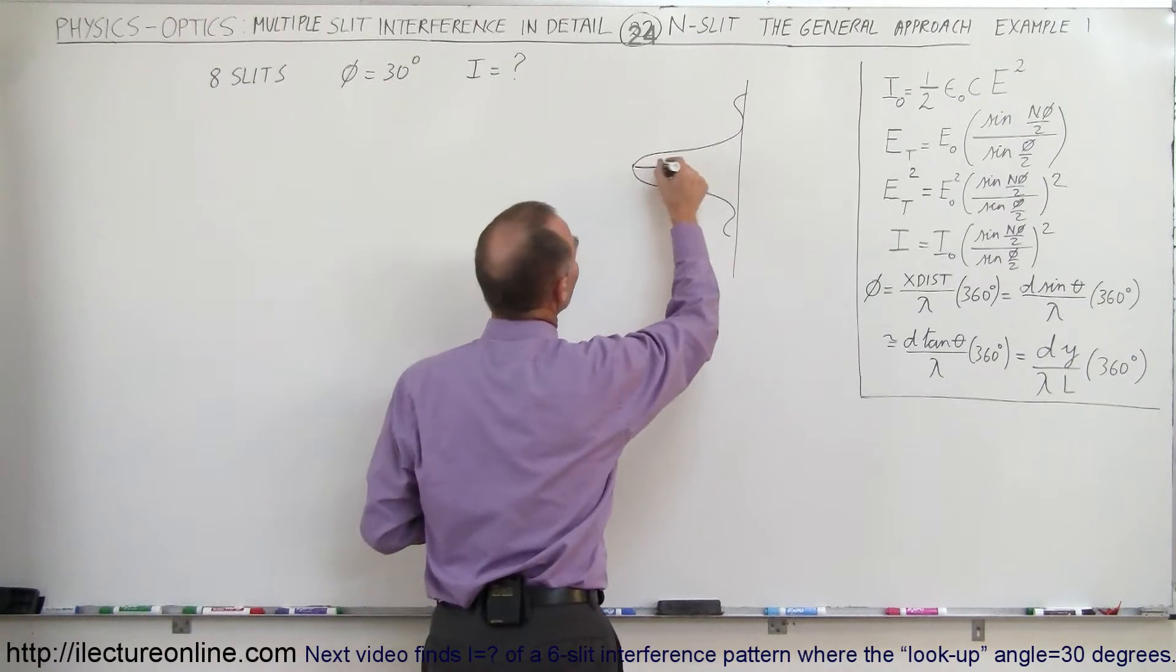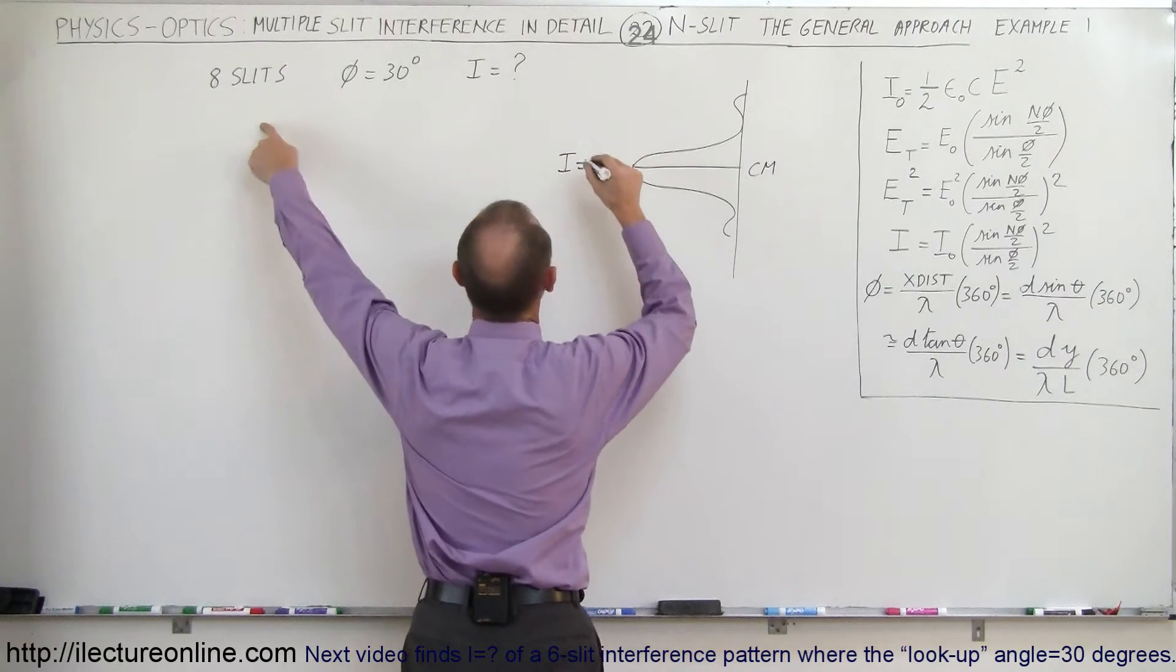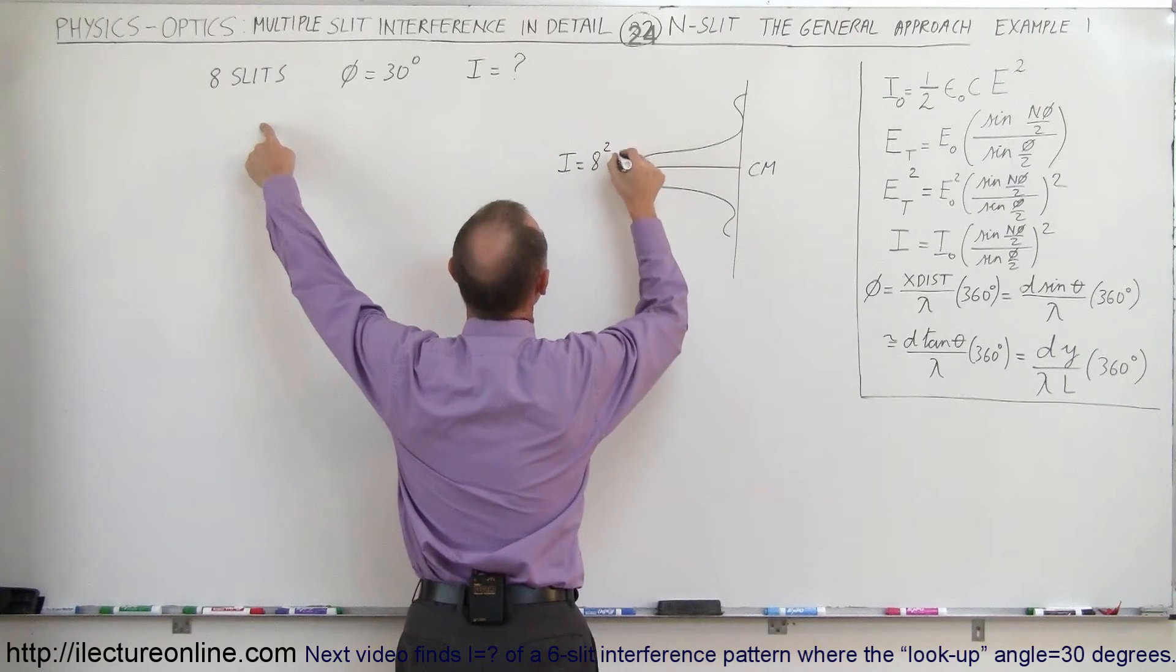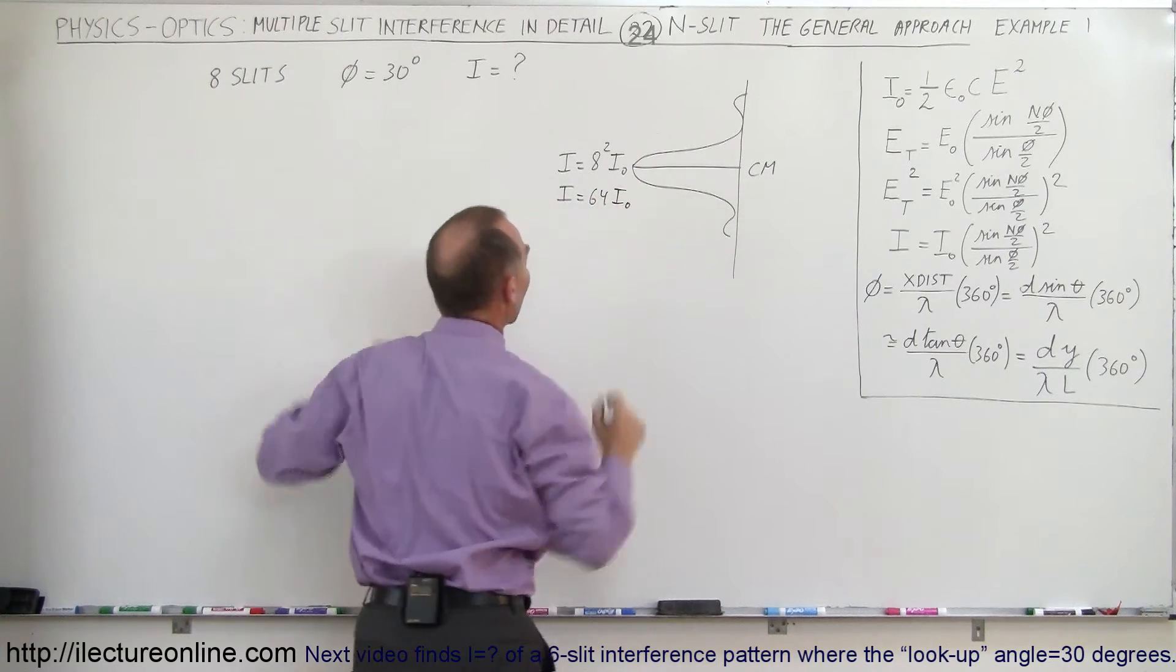But we know that the intensity of the central maximum is equal to the number of slits squared times I sub-naught, so in this case I would be equal to 64 times I sub-naught.